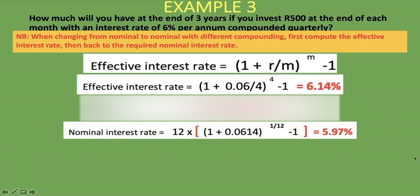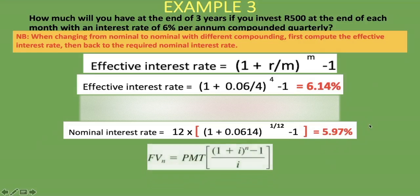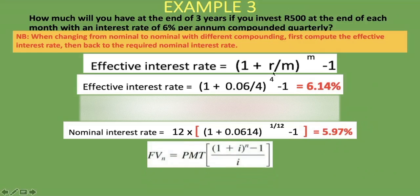Now that we have the interest rate compounded monthly — 5.97% — we can apply the future value of an ordinary annuity formula, because the payment period and the interest rate compounding period are now the same. PMT = R500, i = 0.0597/12, and N = 3 × 12 = 36. So: FVN = 500 × [(1 + 0.0597/12)^36 − 1] ÷ (0.0597/12).